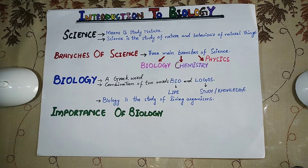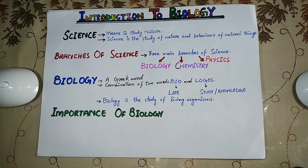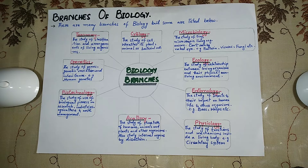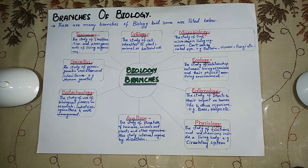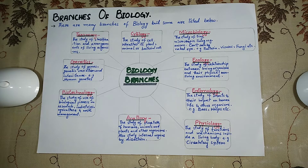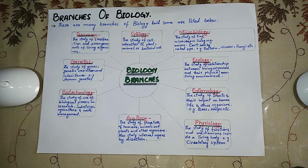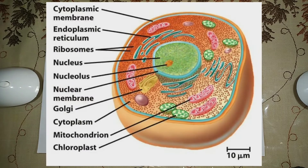There are many branches of biology. The first is taxonomy. Taxonomy is also a Greek word — a combination of two Greek words: 'taxis' and 'nomi'. Taxis means arrangement and nomi means a method. The study of classification and arrangement of living organisms according to their structure, characteristics, similarities, and dissimilarities is called taxonomy.